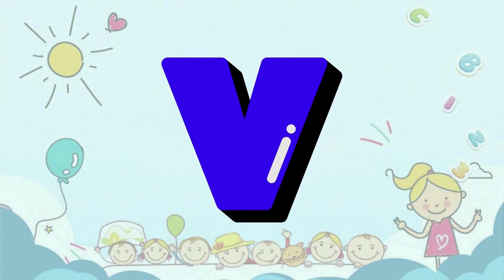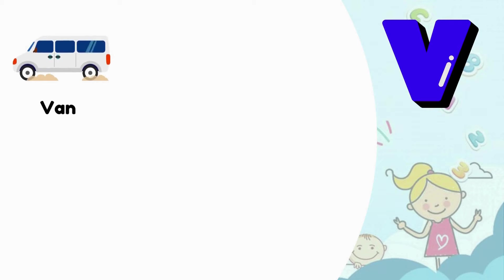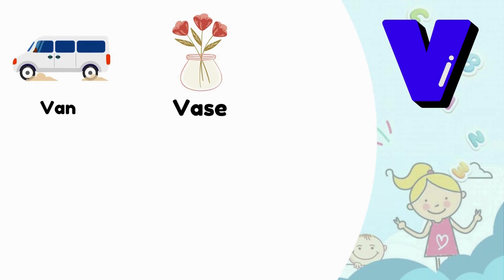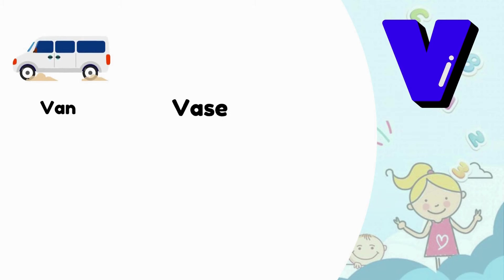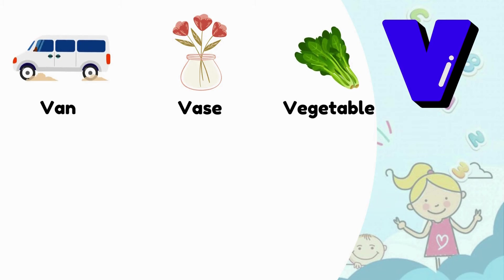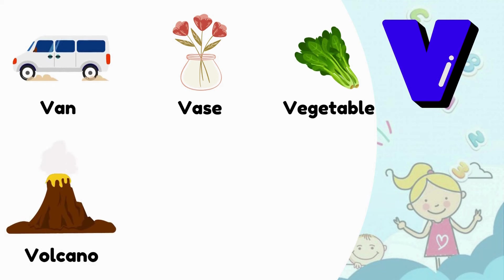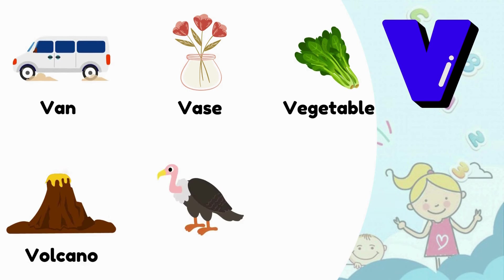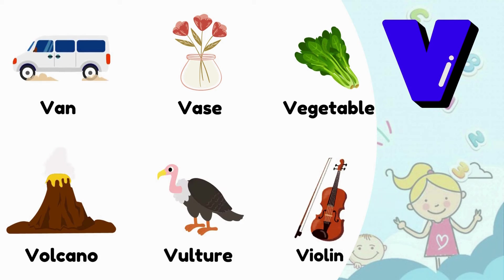V. V is for Vase. V is for Vegetable. V is for Volcano. V is for Vulture. V is for Violin.